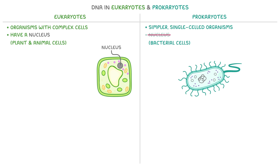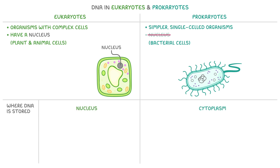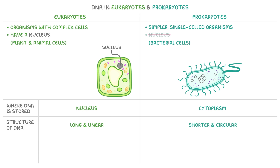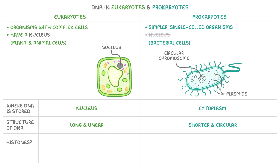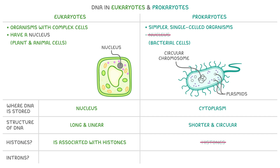Eukaryotic cells and prokaryotic cells also have several differences in their DNA. In terms of where DNA is stored, in eukaryotes it's within their nucleus, whereas in prokaryotes it's found in the cytoplasm. For the structure of DNA, in eukaryotes it's long and linear, but in prokaryotes the DNA is shorter and circular, including one large circular chromosome and smaller sections of DNA called plasmids. For histones, eukaryotic DNA is associated with them, but prokaryotic DNA isn't. The two cell types also differ in whether they contain non-coding introns: whilst eukaryotic DNA does contain introns, prokaryotic DNA generally doesn't.